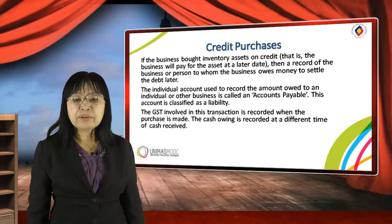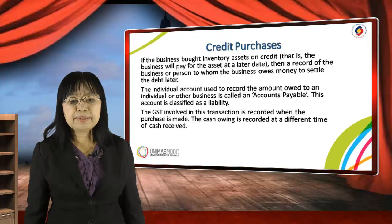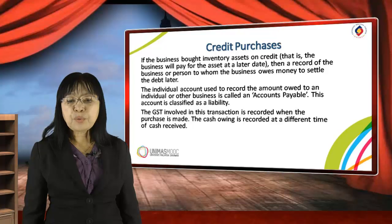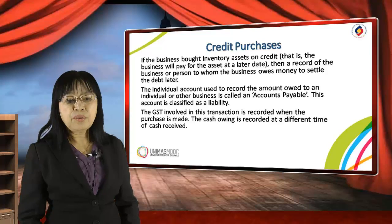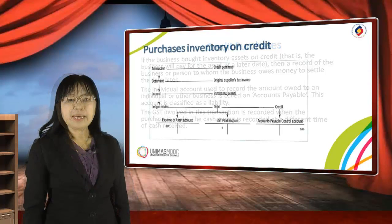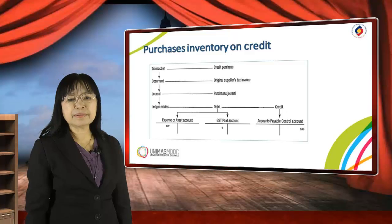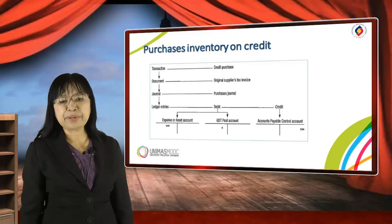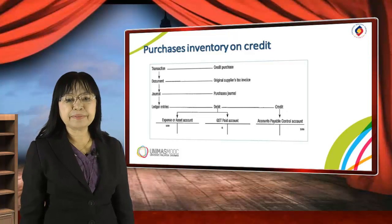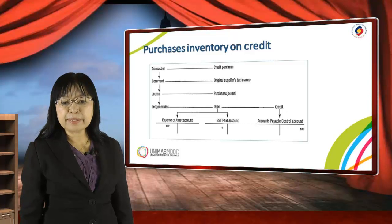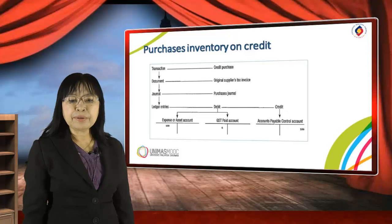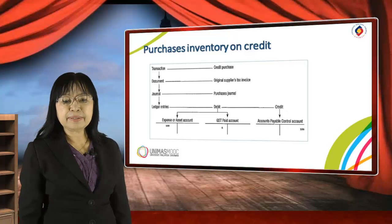The GST involved in this transaction is recorded when the purchase is made. The cash owed is recorded at a different time — at the time of cash receipt. Let's see the features of the accounting records regarding purchasing inventory on credit. The transaction name is credit purchase. The document is the original supplier's tax invoice. The primary entry or journal entry is the purchases journal.